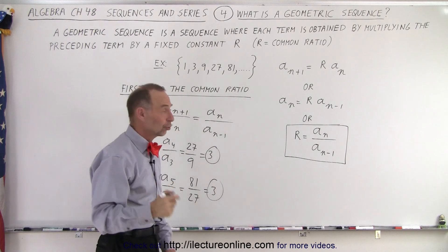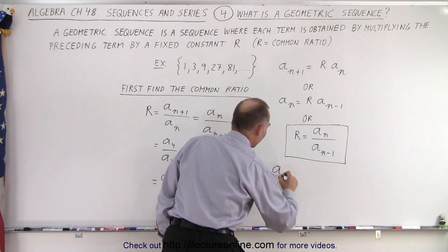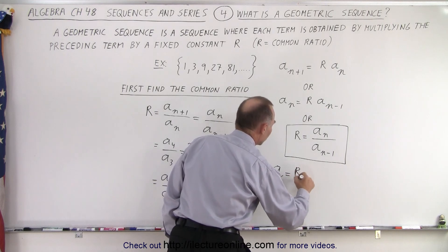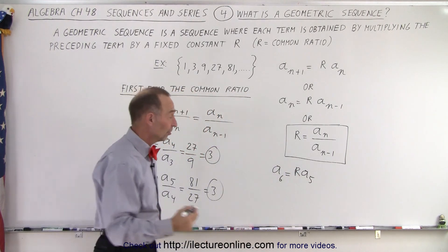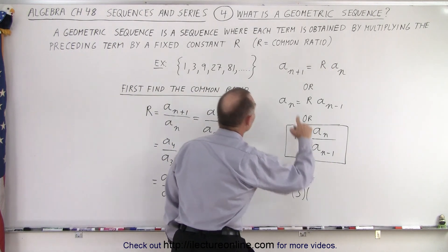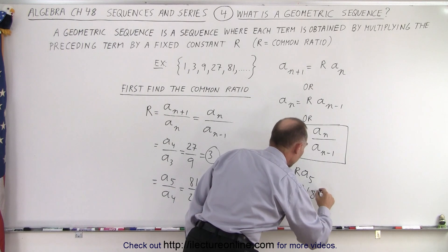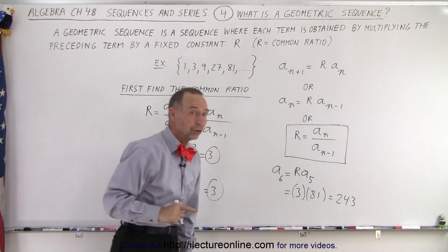So what we can say here is that the sixth term, a sub six, is equal to the common ratio r times the previous term, a sub five. So in this case, that is equal to three times a sub five, which is 81. And so that's going to be equal to 243. So that's the next term in the sequence.